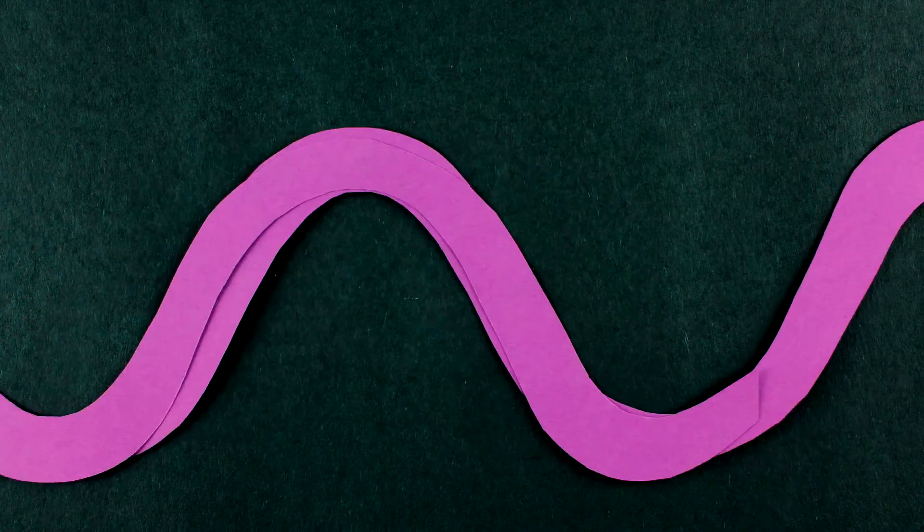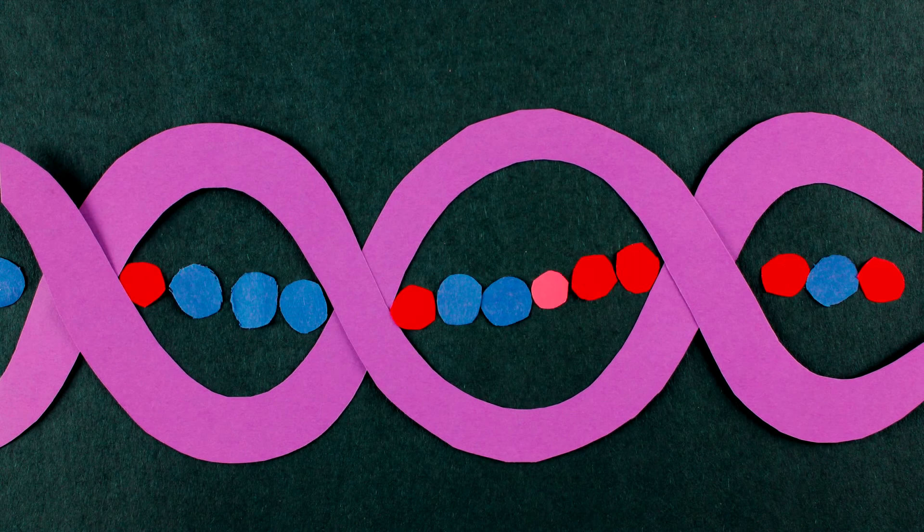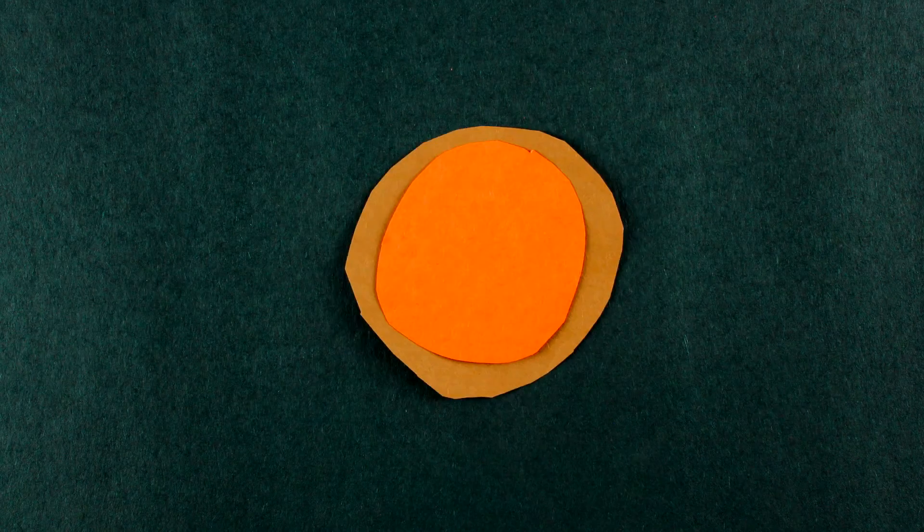It only takes one or two mutations in a few genes to grow L-form bacteria in a lab. They're spherical and squishy since they don't have a cell wall to give them a shape.